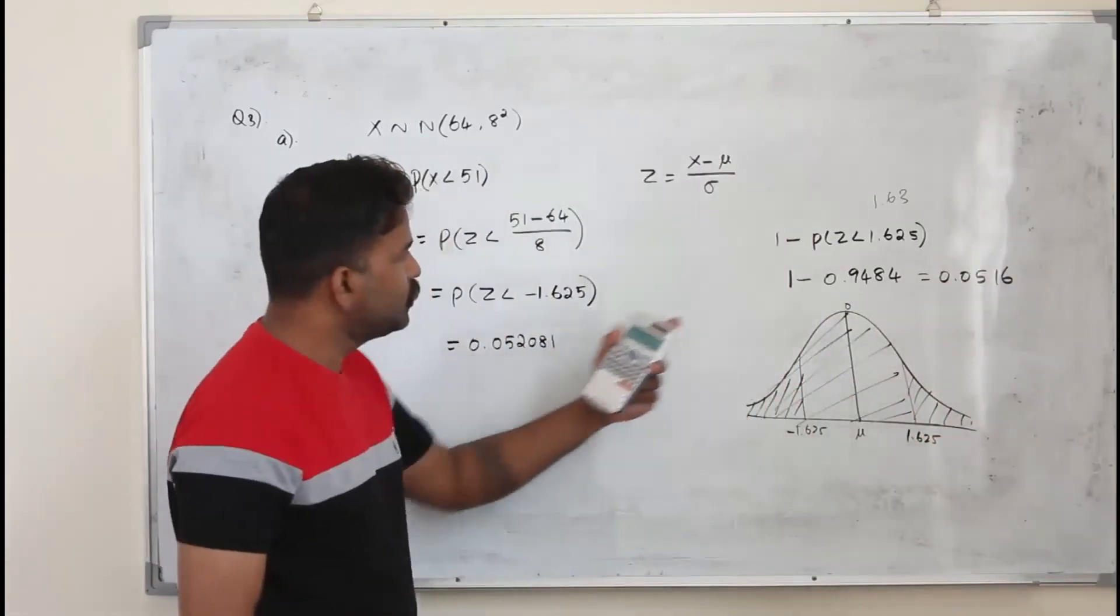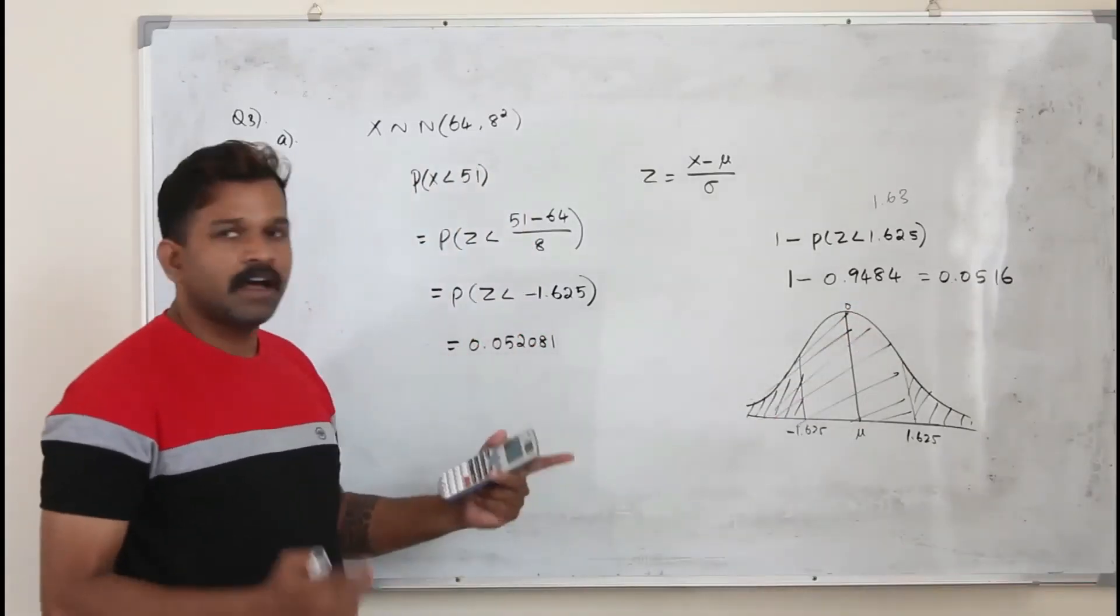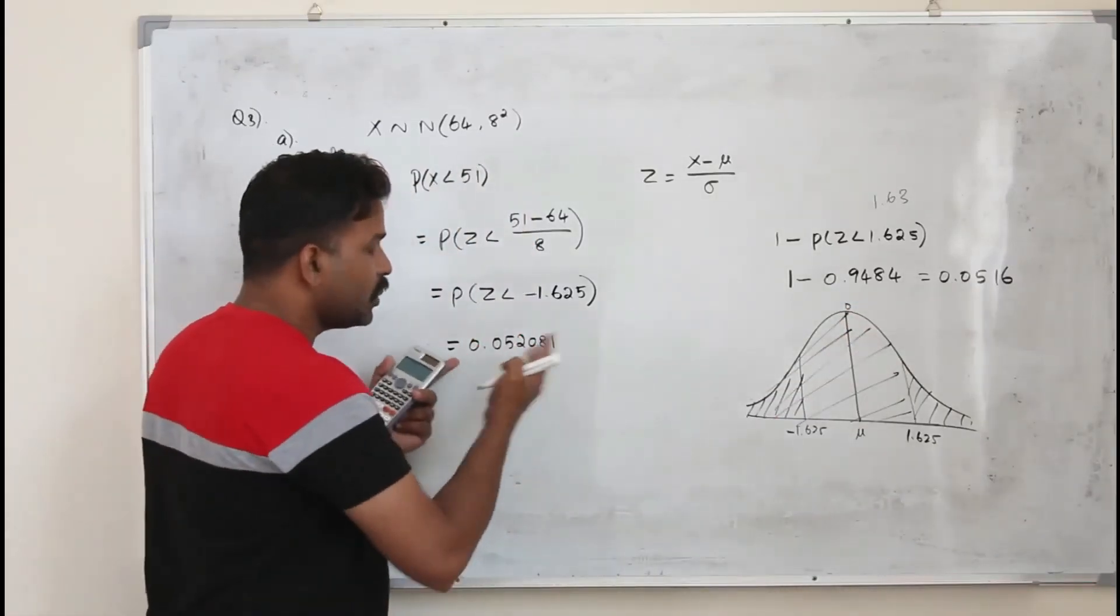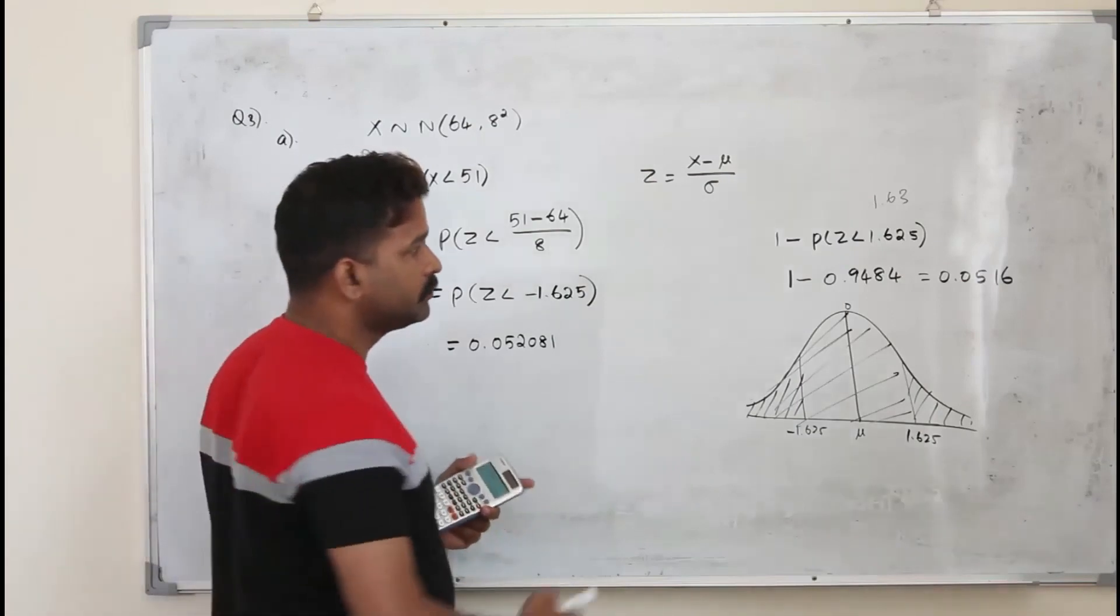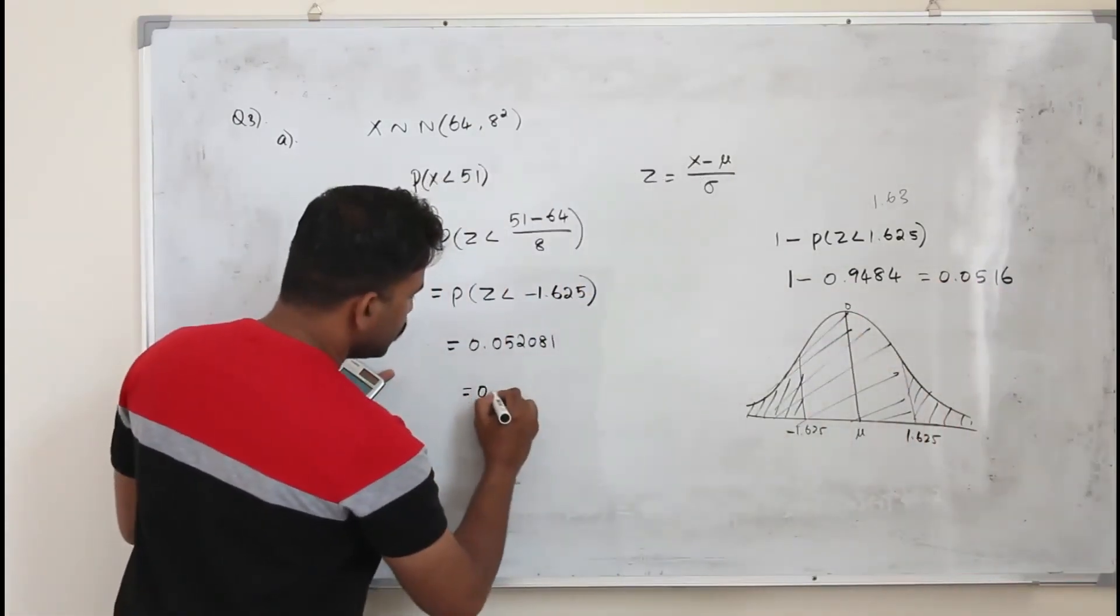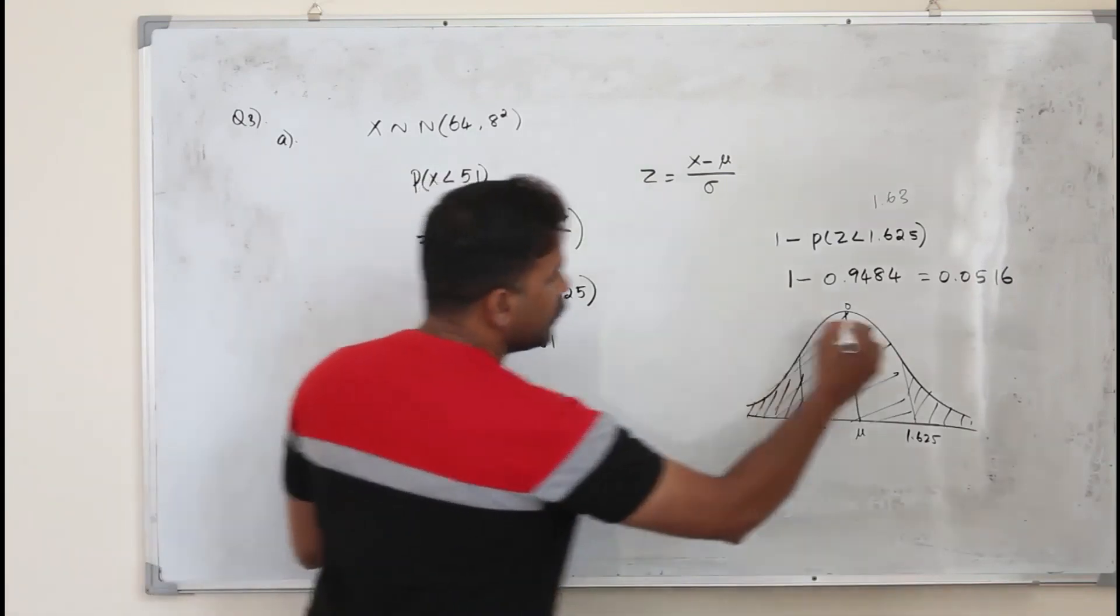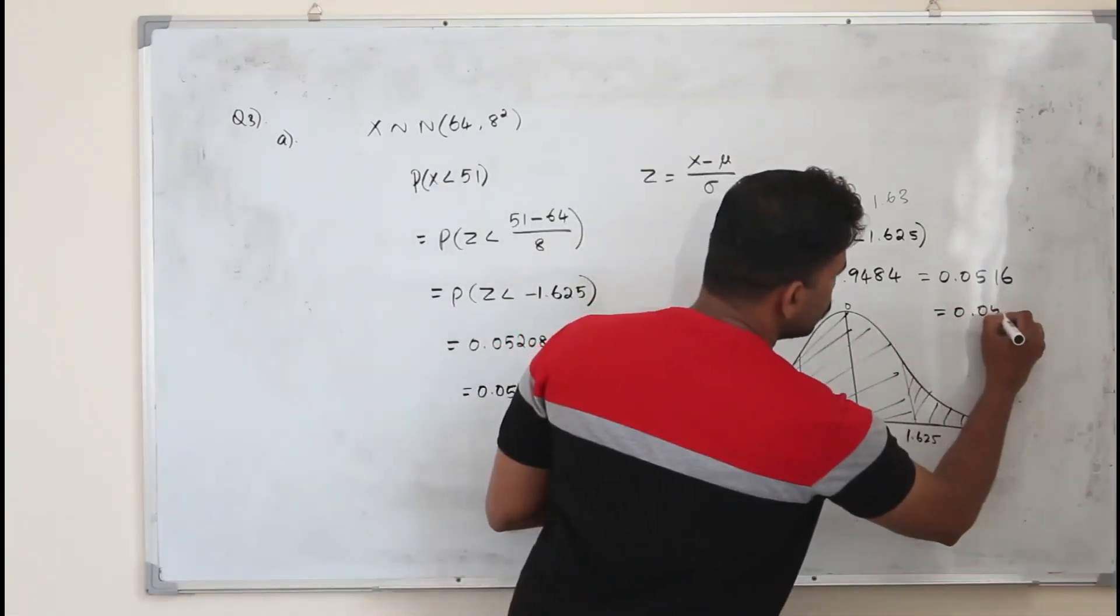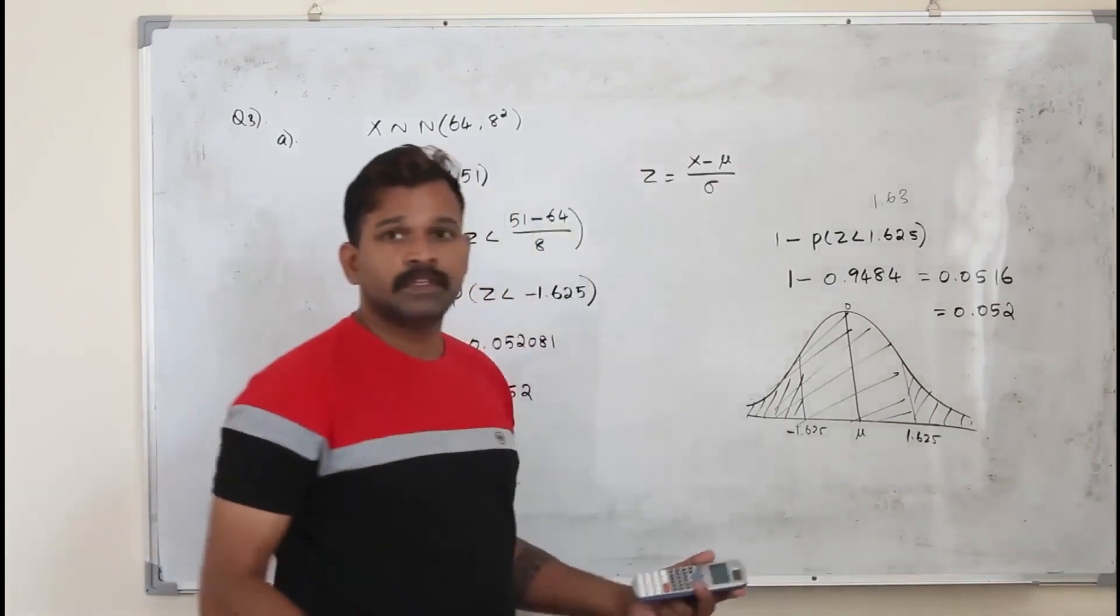If you look at these two answers, they are almost same. You can write this as your answer. So you will be awarded full marks. Here also it is the same. If you round it to 3 decimal places, this is 0.052. Here also you will get 0.052. That's the answer.